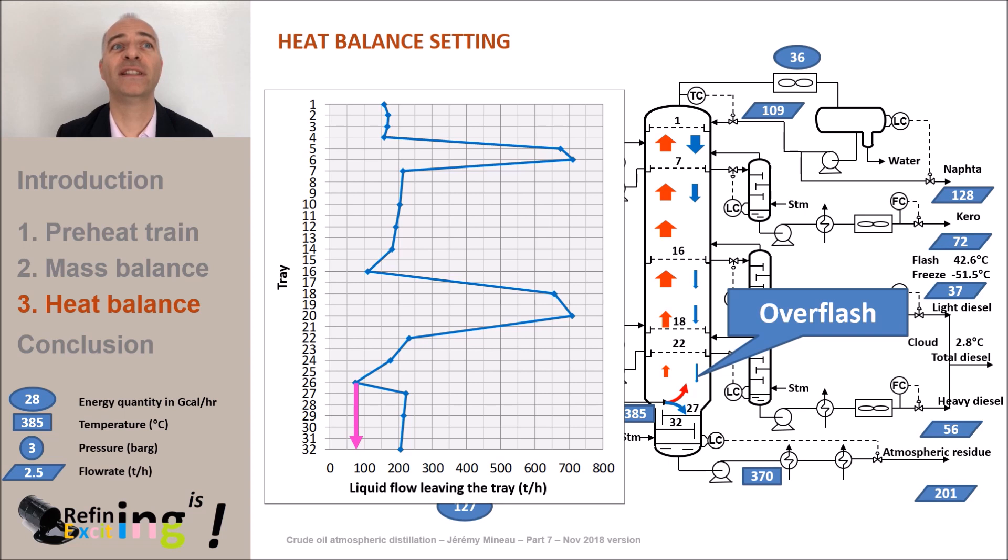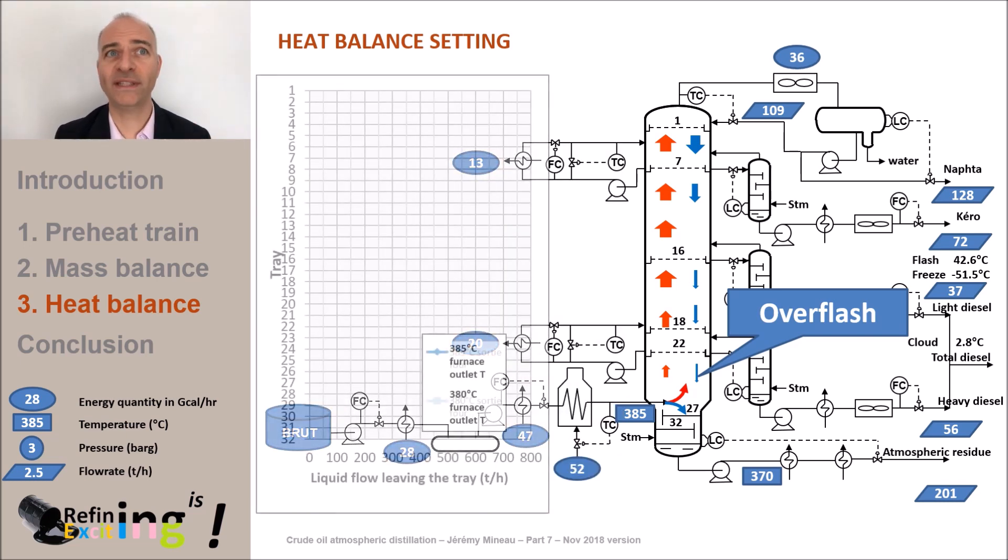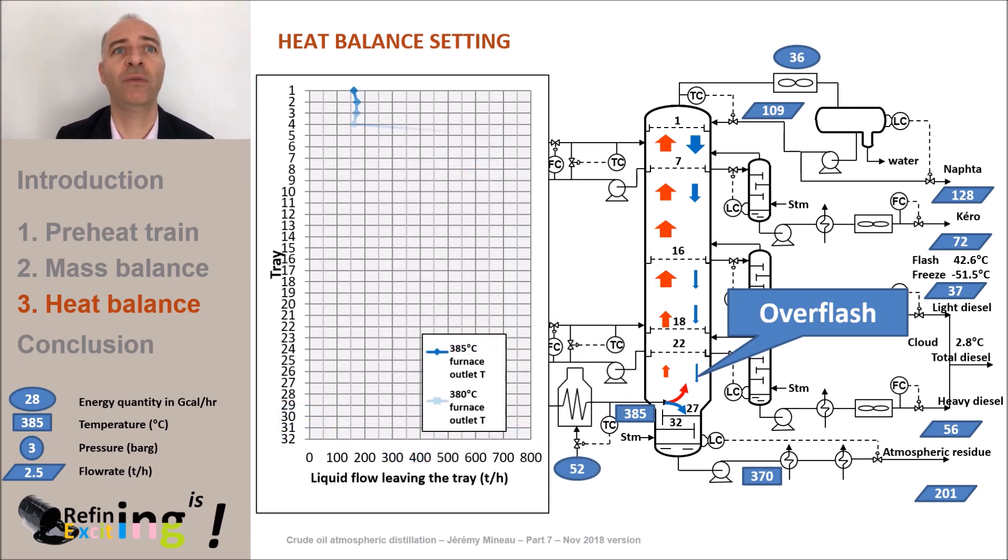As we have processed for the selection duty of the pump around, let's try to reduce this overflash. But how to do that? Simply by decreasing the furnace outlet temperature. I repeat that this value was chosen arbitrarily at 385 degrees C in the previous videos. We start from an initial situation with 75 tons per hour overflash and a furnace outlet temperature of 385 degrees C.